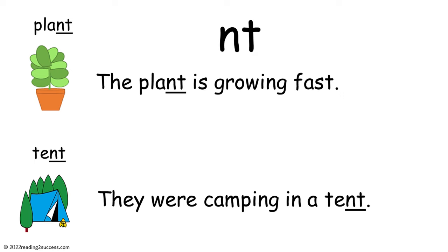Introduce kids to the blend NT. Explain that the letters NT blend together when said as in the words plant and tent. Now say the sentences with kids: 'The plant is growing fast' and 'They were camping in a tent.'